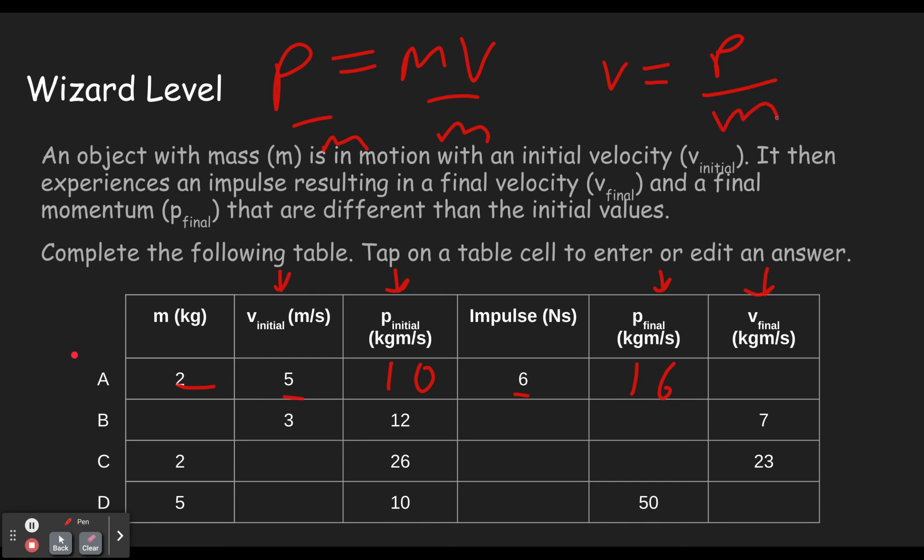So momentum is 16. Mass is 2. 16 divided by 2 is 8. So this would speed up from 5 to 8. Which gives you a change of momentum of 6, going from 10 to 16.